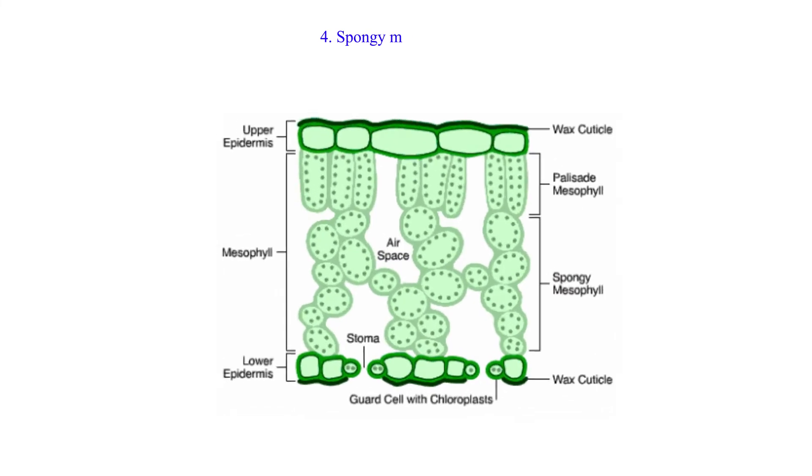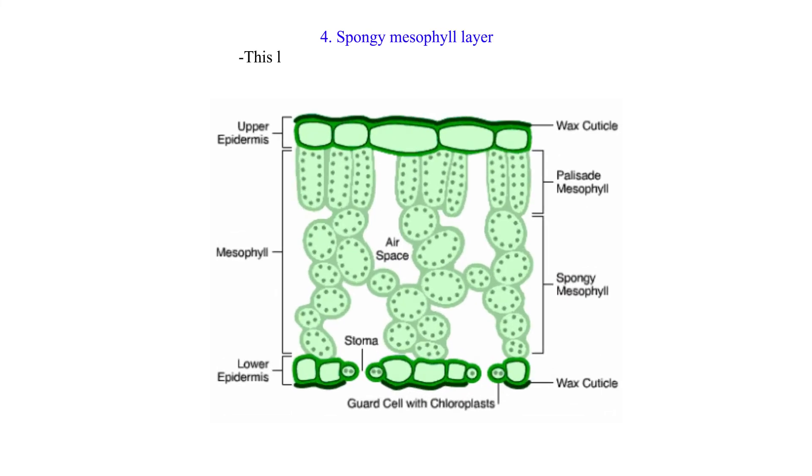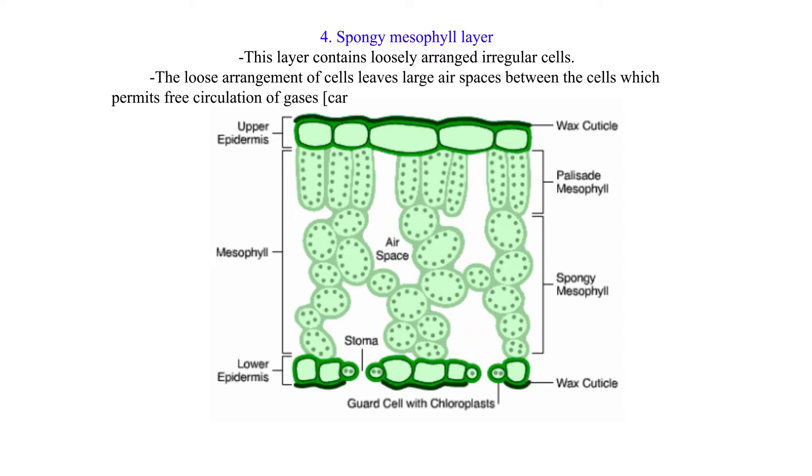4. Spongy Mesophyll Layer. This layer contains loosely arranged irregular cells. The loose arrangement of cells leaves large air spaces between the cells which permits free circulation of gases (carbon dioxide and oxygen) into the photosynthetic cells. NB: Spongy mesophyll cells contain fewer chloroplasts compared to palisade cells.